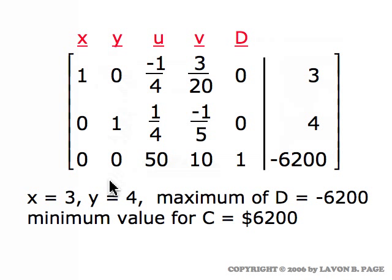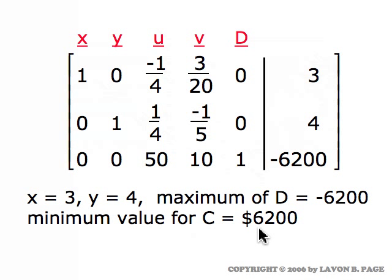Checking ratios for that column: twenty-thirds into twenty gives the smaller ratio, so we pivot on that element, perform the row operations to get the final tableau. This alternate route required one extra step, but still gives X equals three, Y equals four, and a minimum cost of sixty-two hundred — the same optimal solution. When making pivot column choices in non-standard problems, you cannot know which is fastest, but you are assured of reaching the correct solution regardless of your choices.